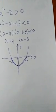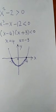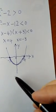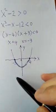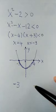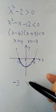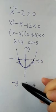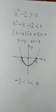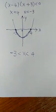Now how do we write the answer? The x values are between negative 3 and 4. So that is the answer.